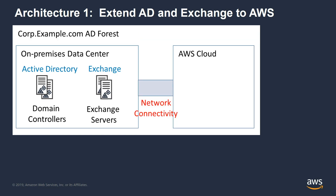So the first step is to establish network connectivity with the AWS Cloud. I see this done in two mechanisms. The first is using a VPN connection over the internet to connect their on-premises data center to the AWS Cloud. The second is called Direct Connect. For enterprise workloads such as Exchange, I'd recommend the Direct Connect approach, where the AWS data centers become kind of like a node on your network, establishing a connection between your network and our network via your MPLS provider.